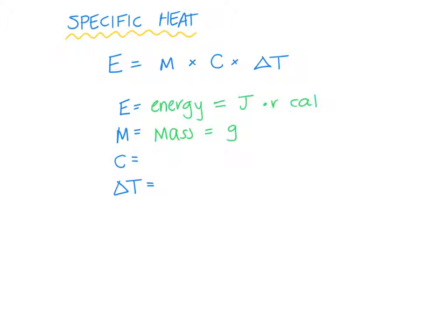C is actually for the specific heat of a substance. Specific heat is an intrinsic value. It is a property of a substance. The unit is a little odd. The unit is calories per gram degrees Celsius. But the unit actually gives you a little bit of idea of what it means. Specific heat is the amount of heat needed to raise the temperature of a substance by one degree. So when it says calories, that's the heat, and it's going to be one gram of substance by one degree.